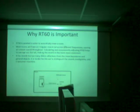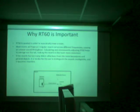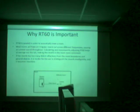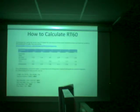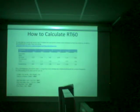RT60 is needed in order to acoustically treat a room. Most rooms will have an irregular reverb tail across different frequencies causing an uneven sound throughout, resulting in calculating and consequently adjusting RT60 to average out the tail, making the reverb more consistent. If the reverb has too many direct reflections from the room boundaries and general objects, it is harder for the ear to distinguish the sound's intelligibility. To calculate the reverb tail across a set of frequencies, we choose the materials and their absorption coefficients, as well as the dimensions of the room.